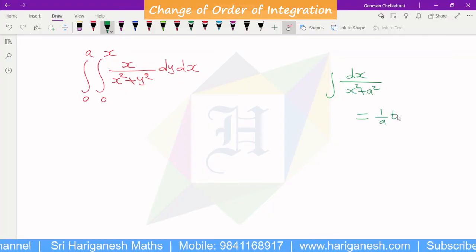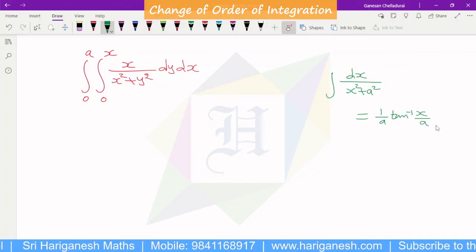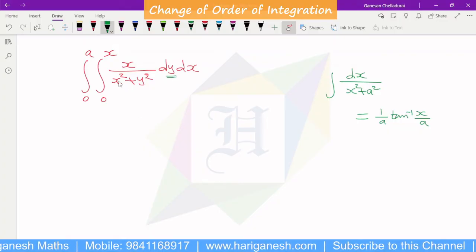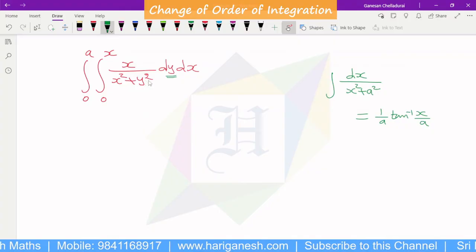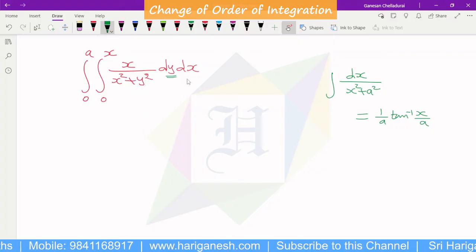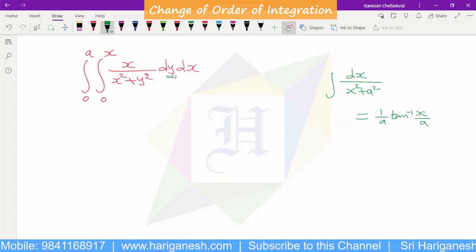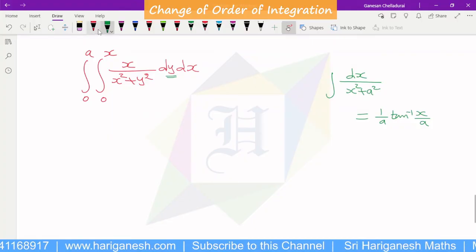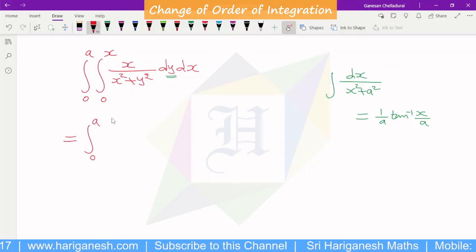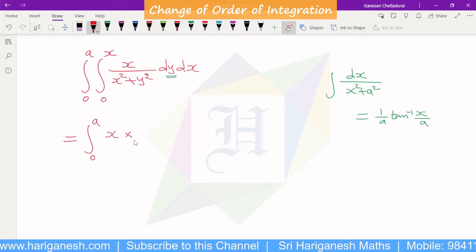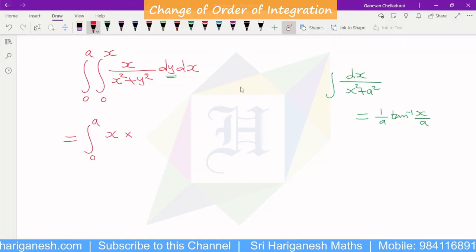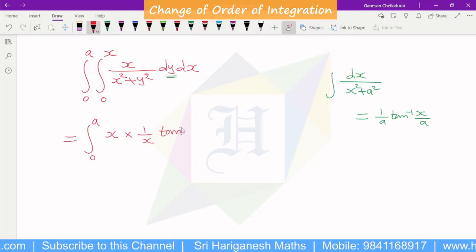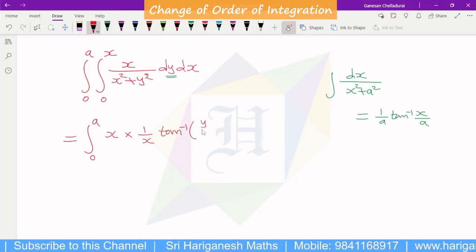The integral formula is 1 by a tan inverse of x by a. We are integrating with respect to y. So x square plus y square gives 1 by x tan inverse of y by x. Apply limits 0 to x.